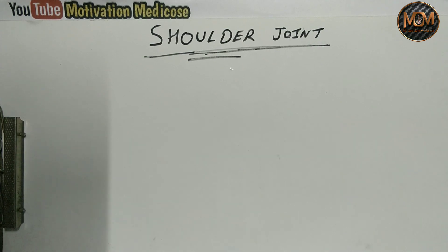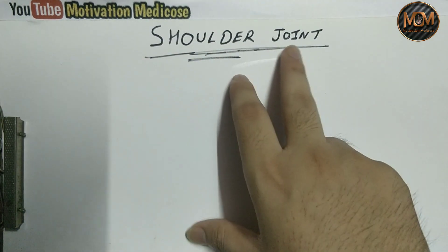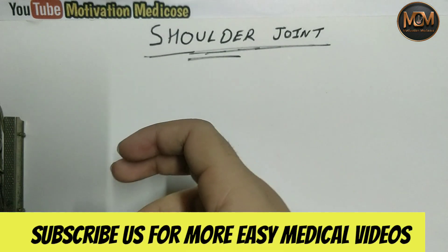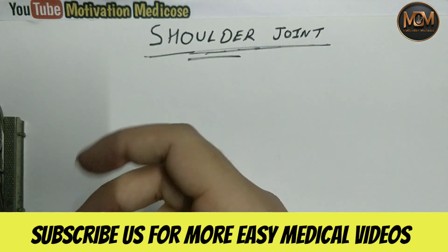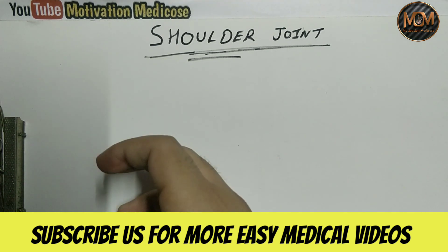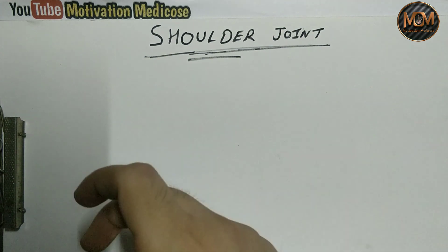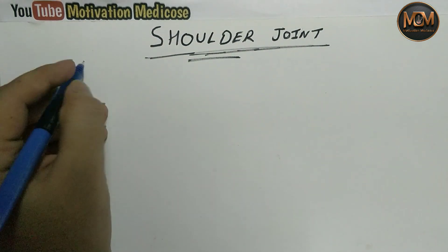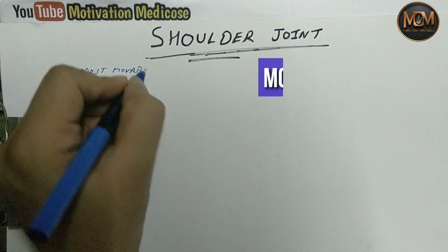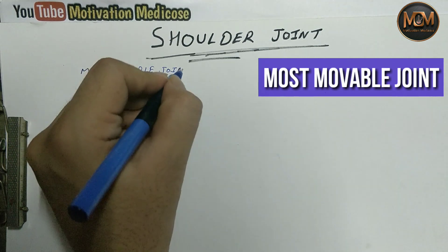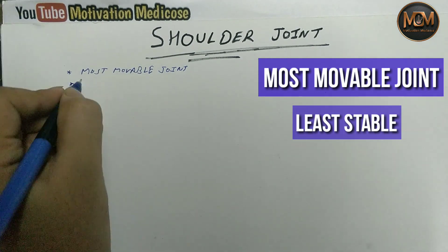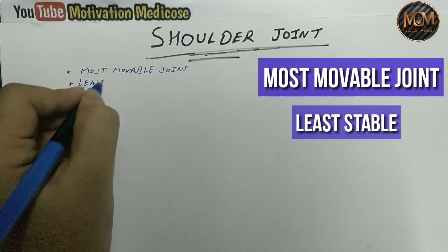What we know in general about this shoulder joint is that it is the most movable joint. As you all know, you can do flexion, extension, abduction, adduction, and circumduction — so many movements are possible at this joint. This is the most movable joint.